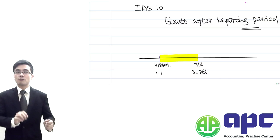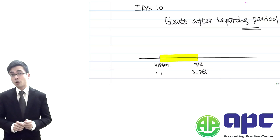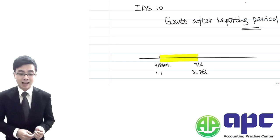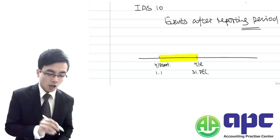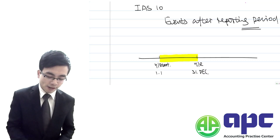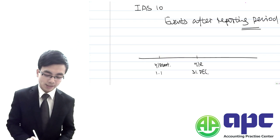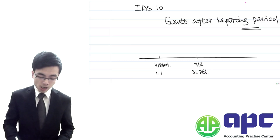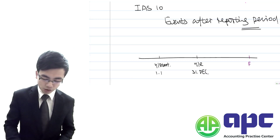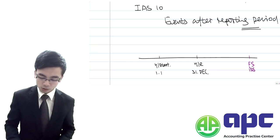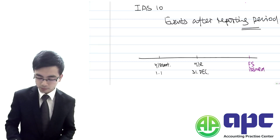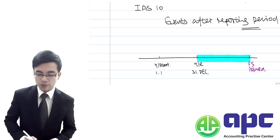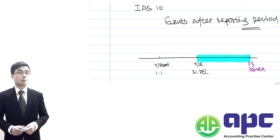But we usually audit the financial statements, because the user will not trust them unless the auditor puts his opinion on the true and fairness of the financial statements. We always start auditing after the year-end, so the events after the reporting period are the events happening between the year-end — 31st December — up to when the financial statements are issued to the shareholders.